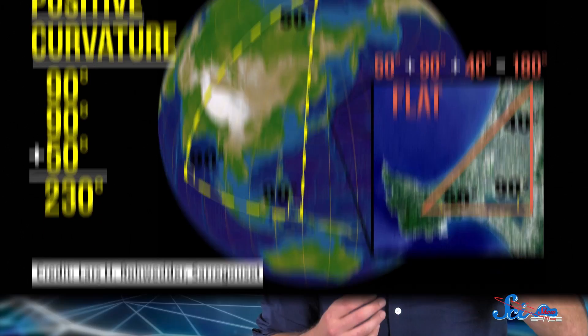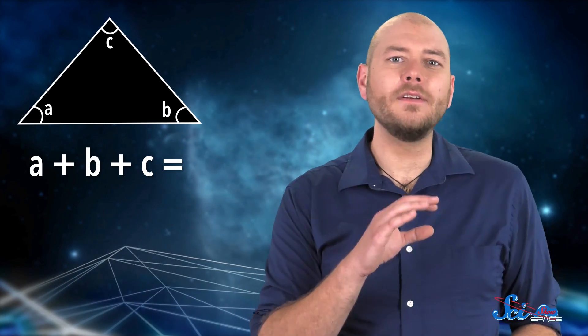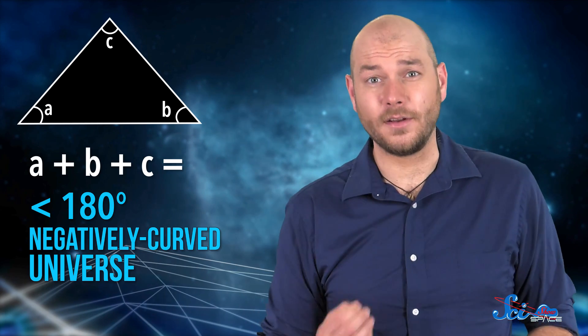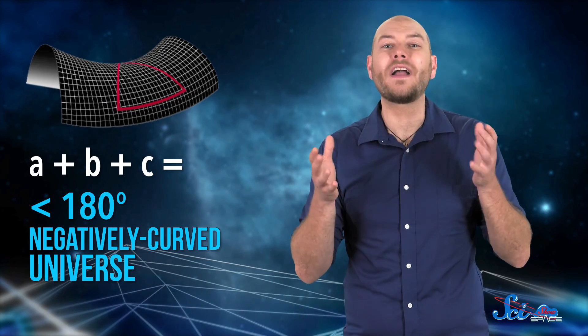That's positive curvature. Negative curvature is the opposite — it's like the sides are bowing inward, and the angles come out to be less than 180 degrees. Physicists model it with a kind of saddle shape. Unfortunately, the universe is just too big for us to actually test this out. It's like how the Earth's surface feels flat beneath our feet even though it's positively curved — we'd never be able to tell if the sides of the triangle were bending. But there are other methods we could use to figure out the universe's geometry.